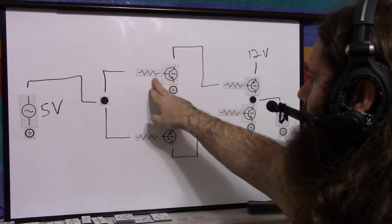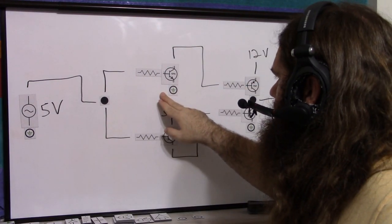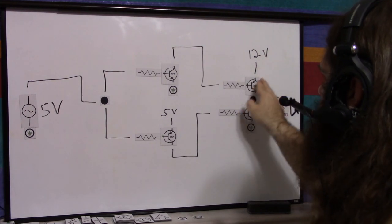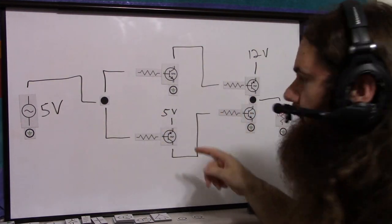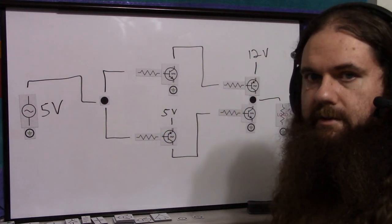If the square wave is high, then this NPN is getting 5 to 0 volts, which opens it up. The collector connects ground 12 volts through ground, turns on the PNP, and the load gets 12 volts.